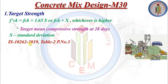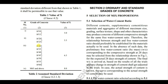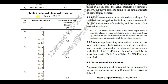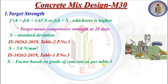As per IS 10262:2019 Table 2, we take the standard deviation value. For M30 grade, the assumed standard deviation is 5 N/mm². From Table 1, we take the factor x based on grade of concrete — for M30 grade, x equals 6.5 N/mm². We take standard deviation s = 5 N/mm² from Table 2 and x = 6.5 N/mm² from Table 1.